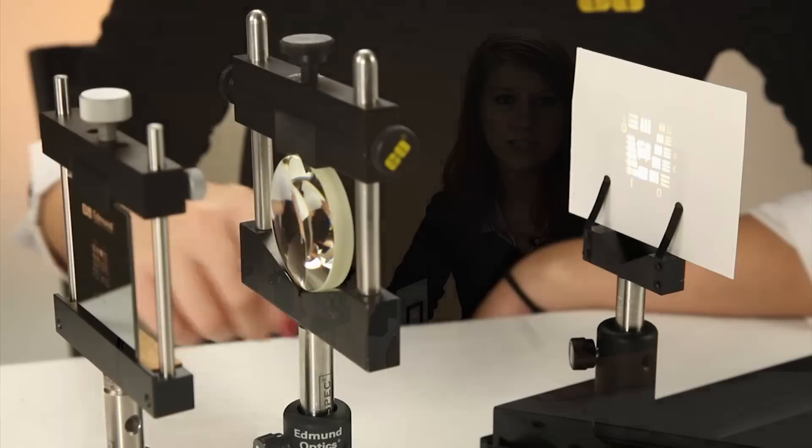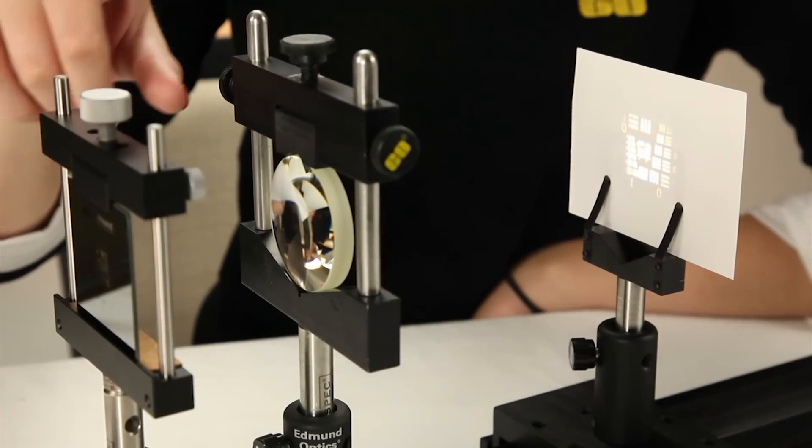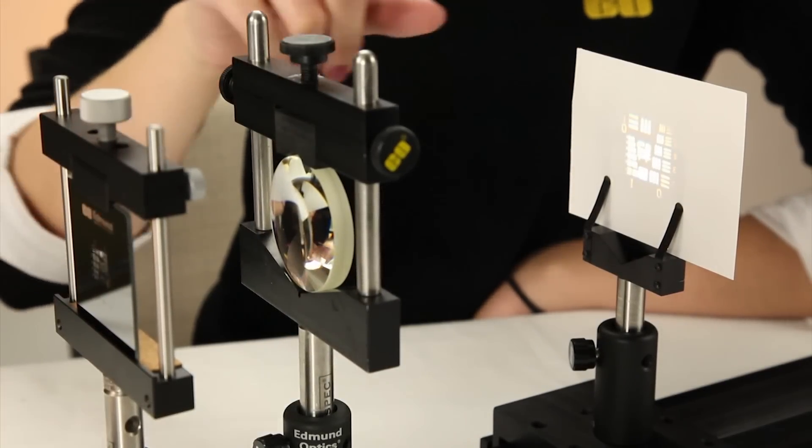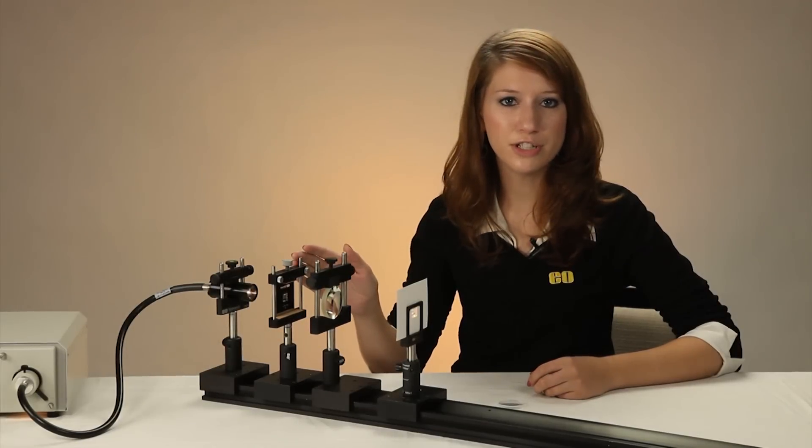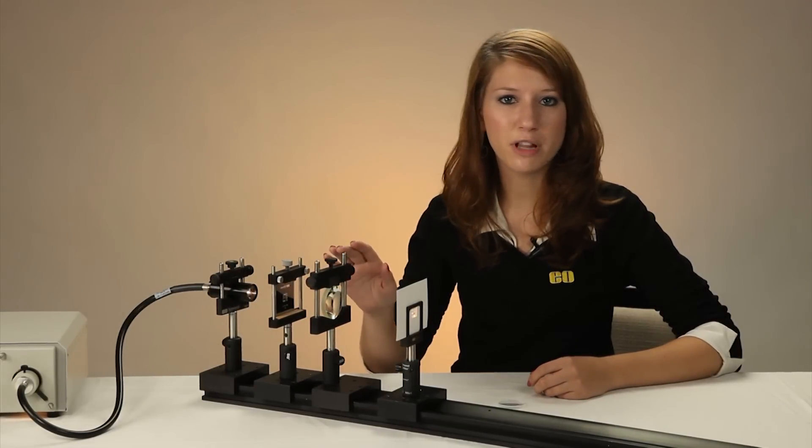For an example, we'll consider an object passing through one single positive lens and forming an image on the other side. In this setup, our object is a USAF resolution target and the lens has a 50 millimeter focal length.